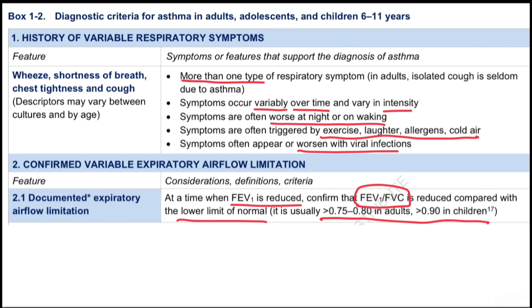Now we come to the diagnostic criteria for asthma in adults and children from 6 to 11 years — this is the most important slide of this chapter. The first criterion is a history of variable respiratory symptoms: wheeze, shortness of breath, chest tightness, and cough. More than one type of respiratory symptom should be present. Isolated cough in adults is seldom due to asthma.